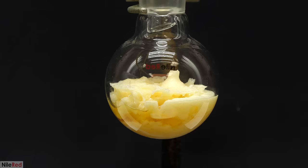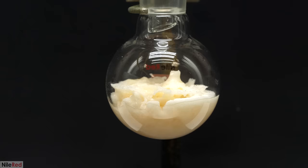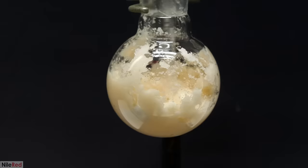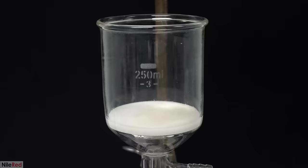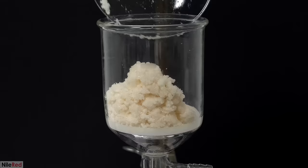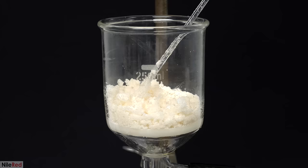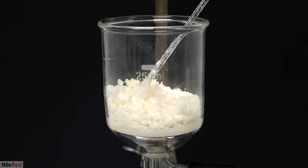As it cooled down, the yellow color slowly faded, and by the time that it was room temperature, it was mostly white. I broke it up as best I could with a glass rod, and then I transferred it all to a filter funnel. It really didn't look like there was much or any solvent left over, but it was all still there, and it was just stuck to the solid. So when it was all added, I turned on my vacuum pump, and you can see that quite a bit of liquid was pulled out. I let the pump run for a few minutes to dry it up as much as possible.